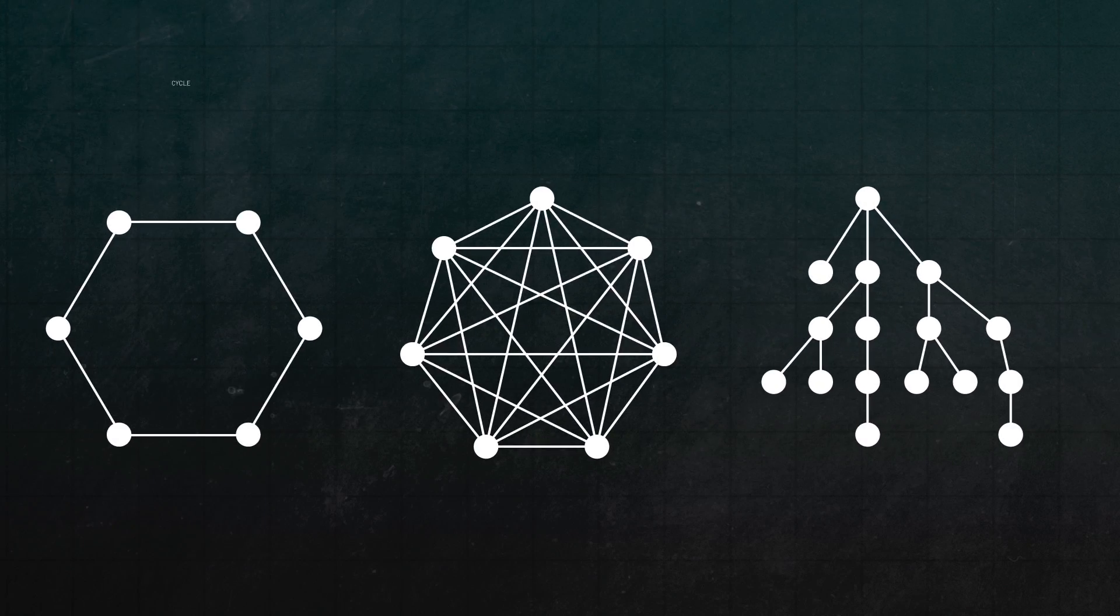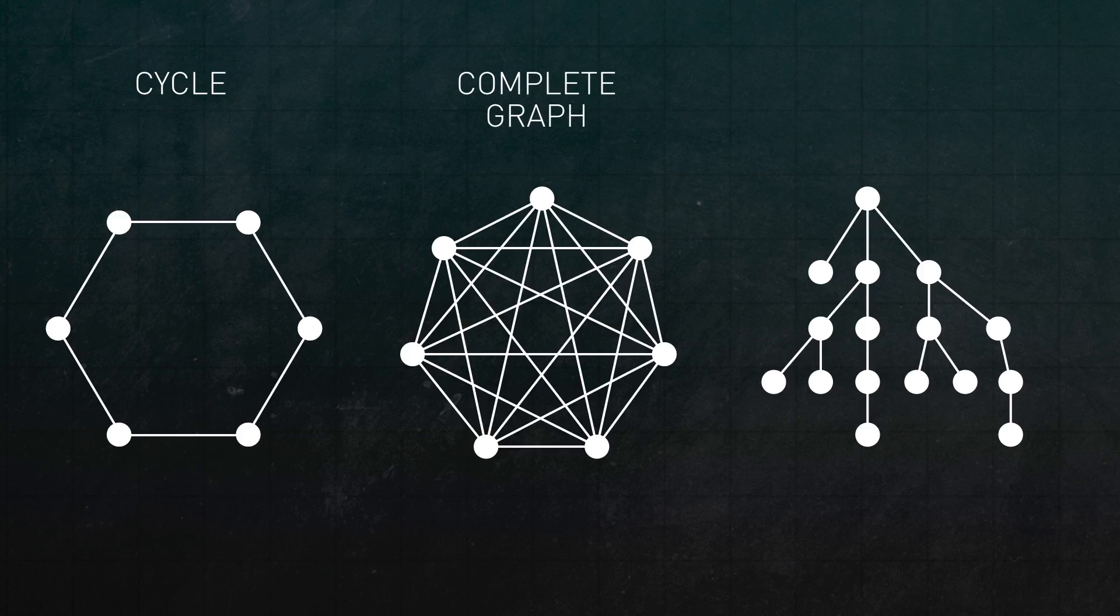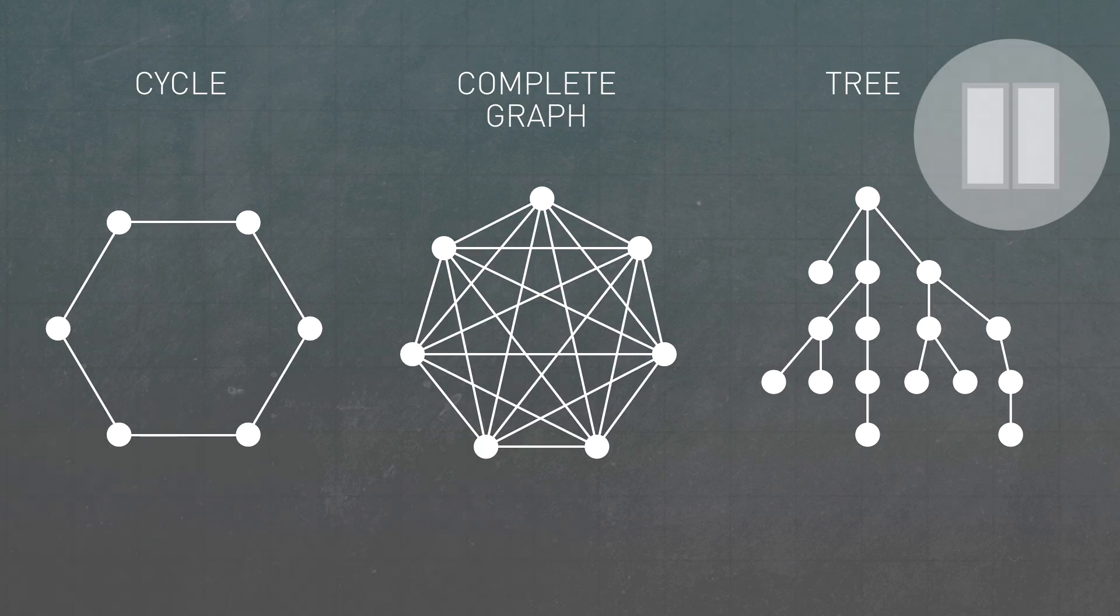How can you tell if a graph is a cop win or a robber win? Here are three graphs: a cycle, where all the vertices are connected in a circle; a complete graph, where each vertex is connected to every other vertex; and a tree, which contains no cycles. I'd encourage you to pause here and consider what each player's best strategy is for each graph. Who wins, the cop or the robber?